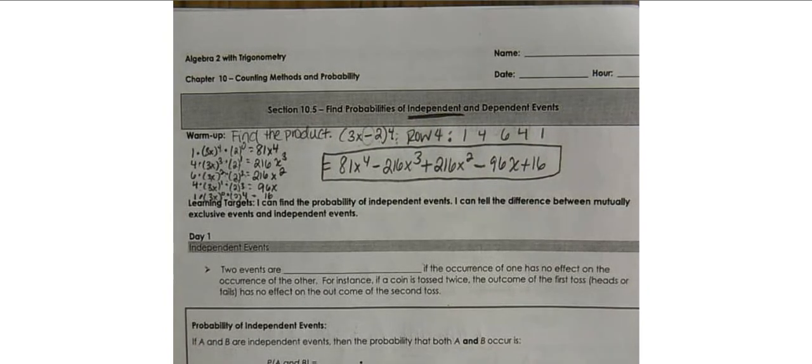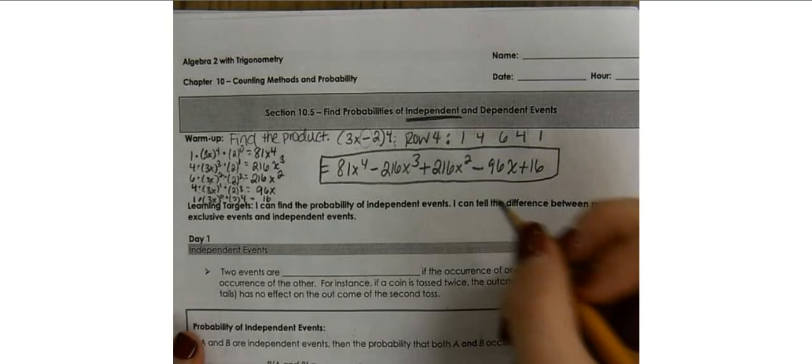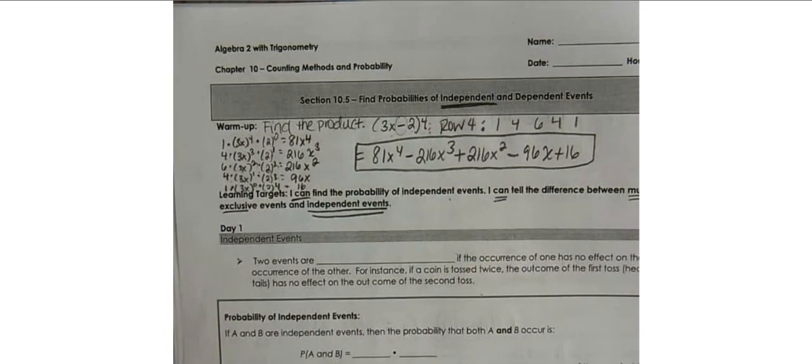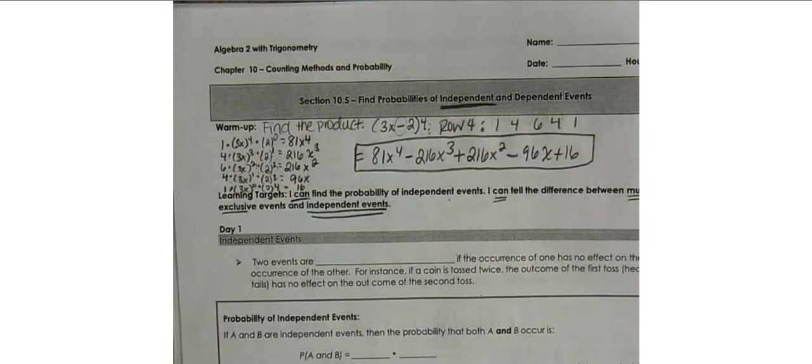Hopefully you got this answer correct and were able to show the proper work. If you struggled with this problem, please let me know and we can go through more problems like it. This lesson is about identifying the probability of independent events — that is your first learning target: I can find the probability of independent events, and I can tell the difference between mutually exclusive events and independent events.